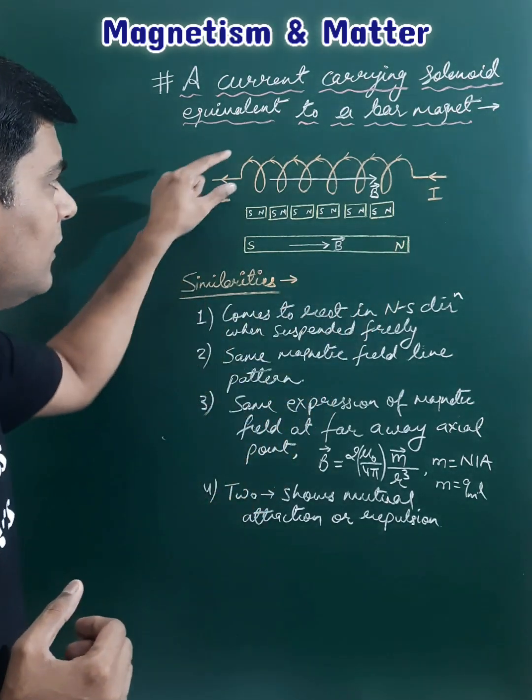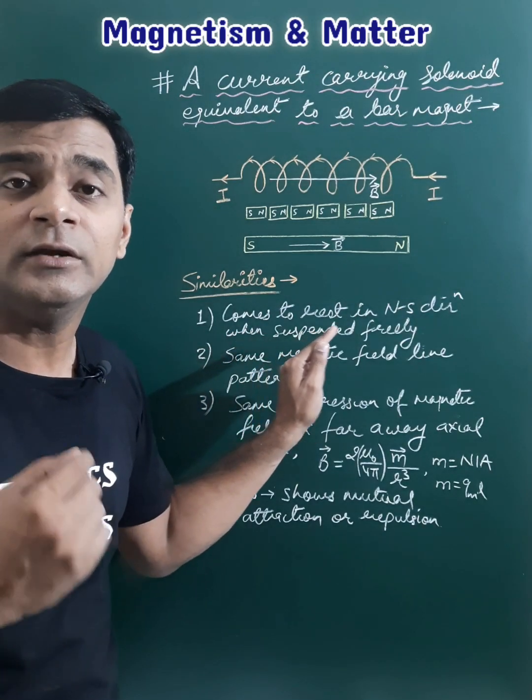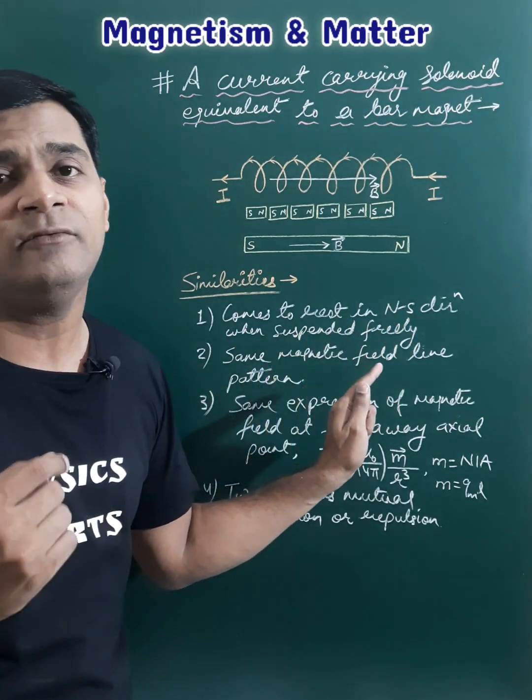The similarities between current carrying solenoids and bar magnets are: first, they both come to rest in the north-south direction when suspended freely.